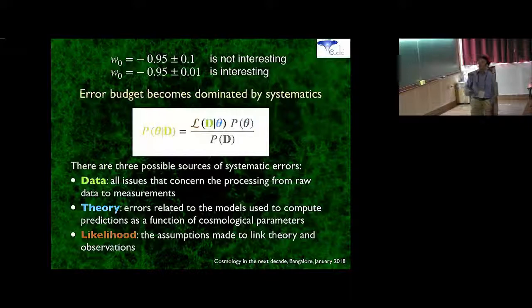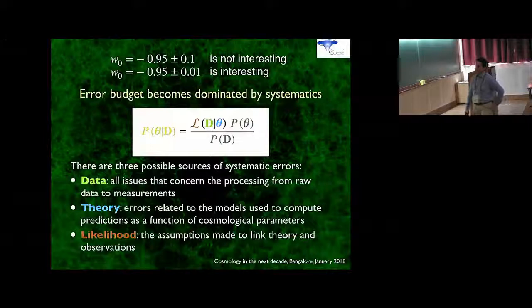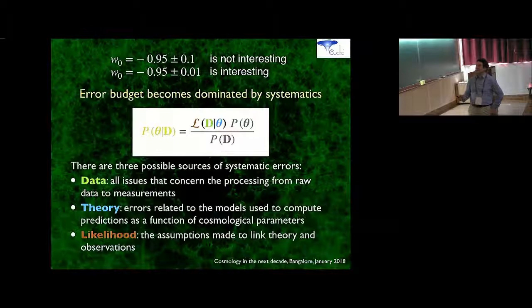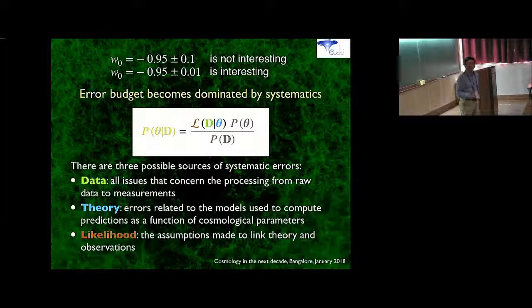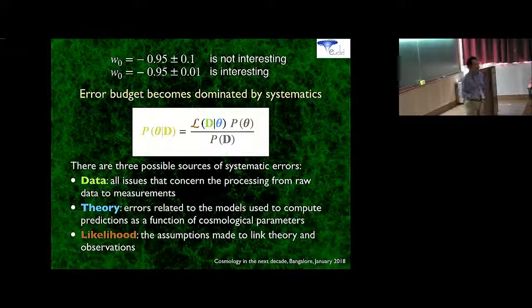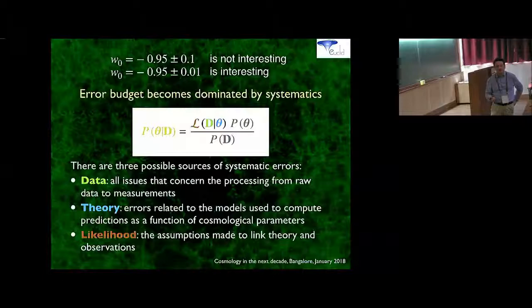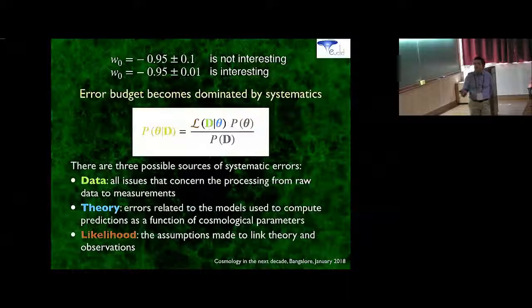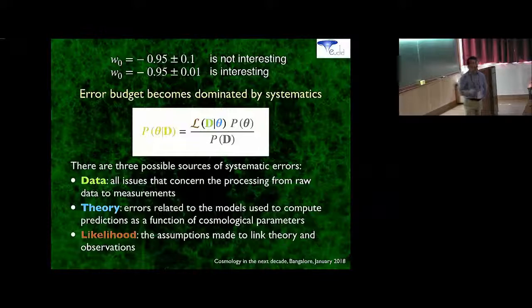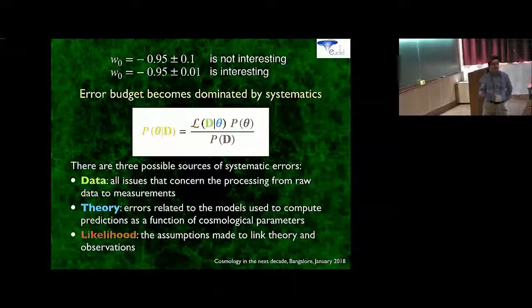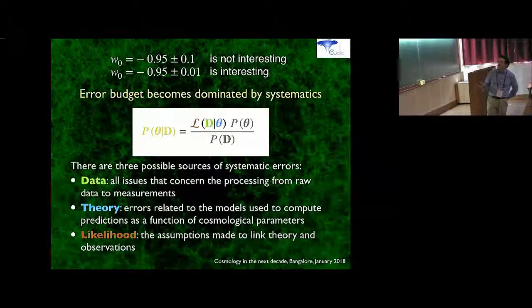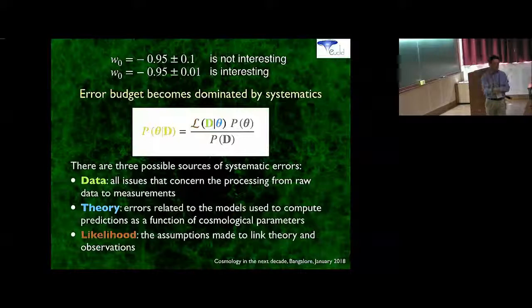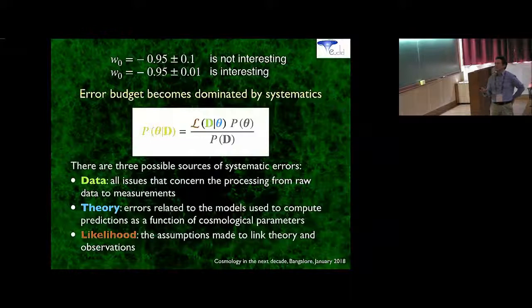Making these measurements, we can have constraints on the equation of state of dark energy, and there are a number of present and future surveys: BOSS, DES, DESI, LSST, SKA surveys, W First, and I'm participating to the preparation of the Euclid satellite. I will mention it several times in this talk.